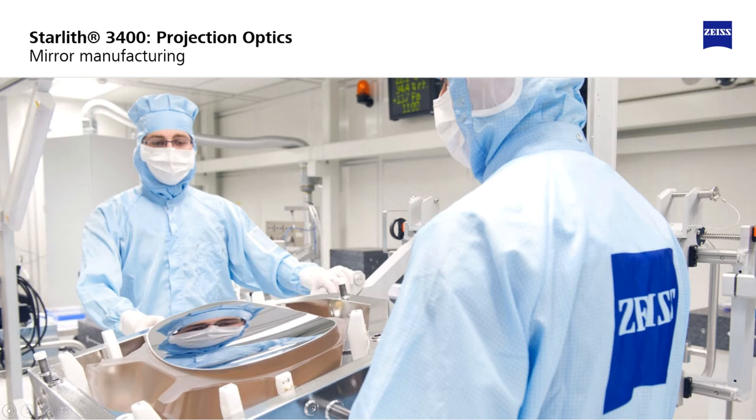Roughness reduction is achieved by polishing with large tools. Choosing appropriate polishing slurries and polishing pads is crucial. A full mirror specification will typically be below 100 picometer RMS.